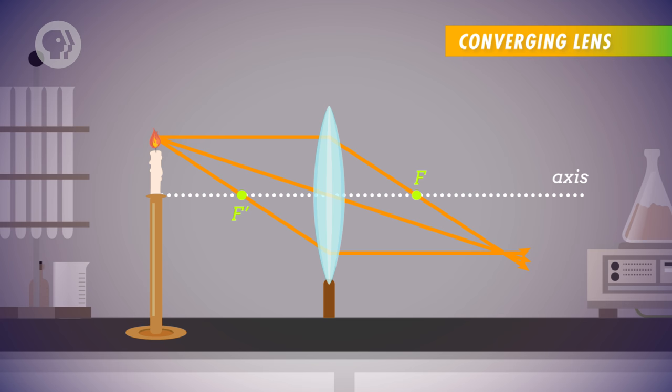With these three rays in place, we see that they intersect at a single point, representing the top of the candle in the newly formed image. You might notice that the image is upside down, which will always be the case for convex lenses.